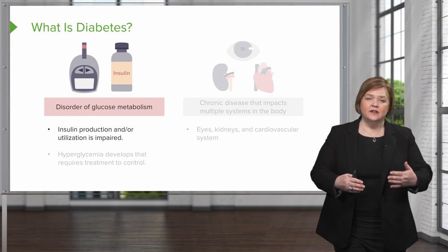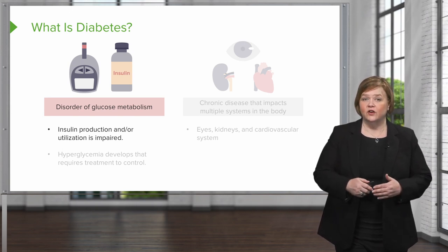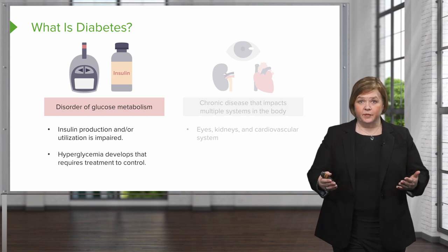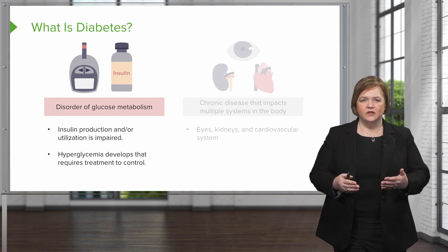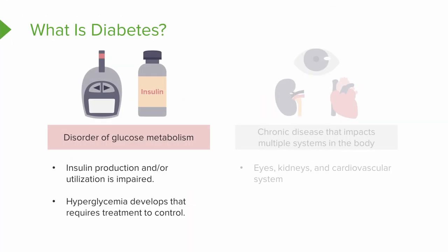Eventually even type 2 diabetics are probably going to run very low on available insulin. The patient develops high blood sugar — that's what hyperglycemia is. It's so high that it's going to cause damage to the patient, so it requires treatment. Recognize it's a disorder of glucose metabolism. In type 2, they have insulin, they just may not be able to use it very efficiently, and insulin is what helps get glucose from the bloodstream into the cell.